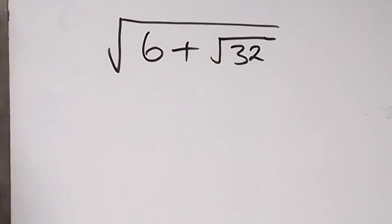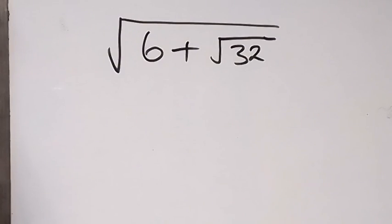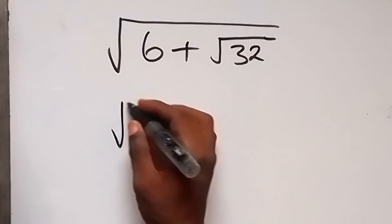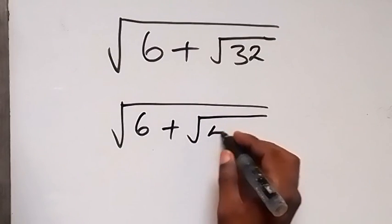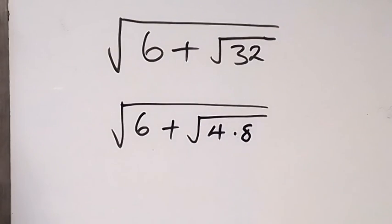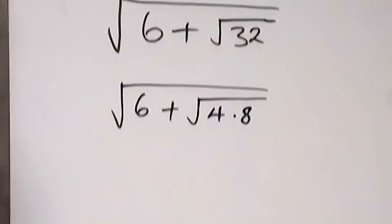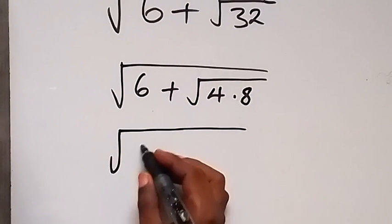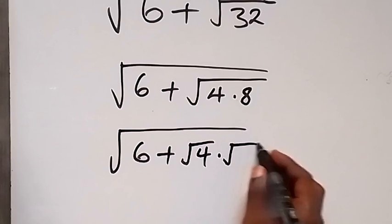Hello, you are welcome. How to simplify this: square root of 6 plus root 32. From here we can rewrite this — 32 can be written as 4 times 8, which we can separate as square root of 6 plus root 4 times root 8.